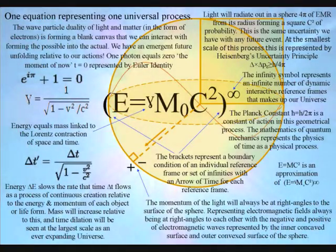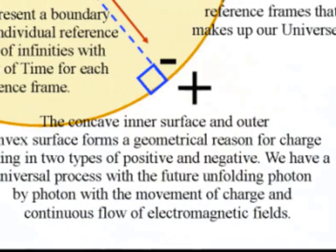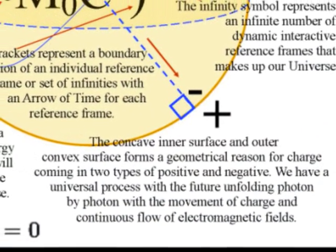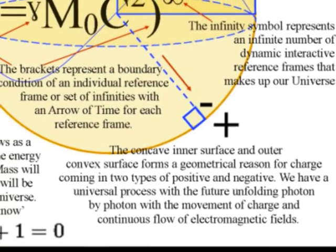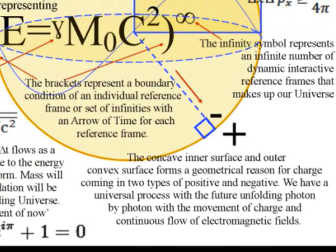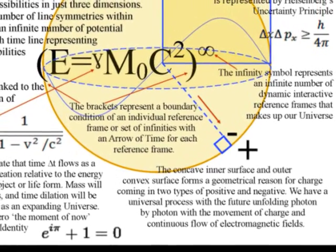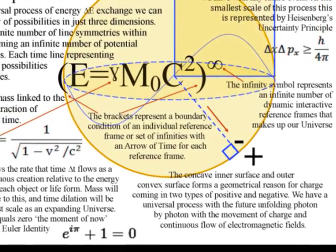In such a theory, the information for the three dimensions of our everyday life is encoded on the two-dimensional surface of the sphere in the form of positive and negative charge. The inner concave surface represents negative charge and the outer convex surface represents positive charge.